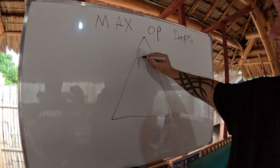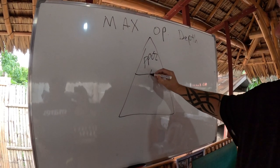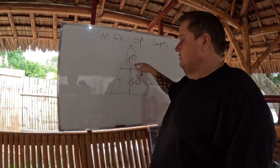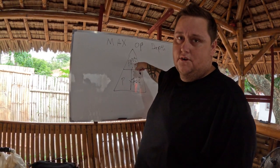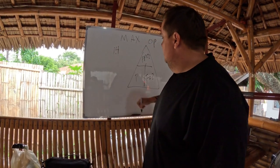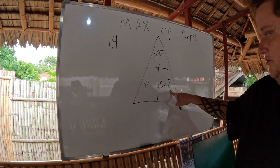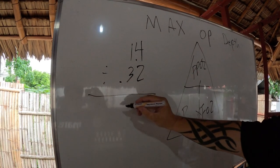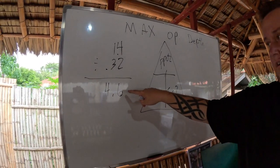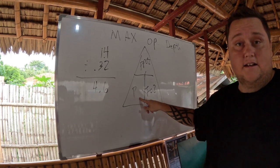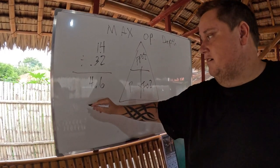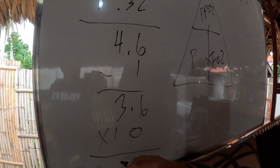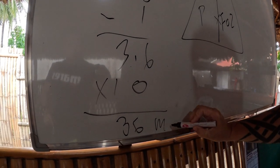The equation is a pyramid: PPO2 divided by FO2, times pressure. We use 1.4 for our PPO2. We know our FO2 is 32%, so that's 0.32. So 1.4 divided by 0.32 gives us 4.6. To find our max operating depth: 4.6 minus 1 for the surface equals 3.6, times 10 — that is 36 meters max operating depth.